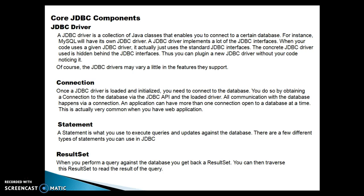The next component is the JDBC statement. A statement is used to execute queries and updates against the database. There are a few different types of statements you can use in JDBC — basically three types — which we will discuss in a future session. Regarding the result set: when you perform a query against the database you get back a result set. If you have a select query and execute it, the database returns a result set, and you can then traverse this result set to read the results of the query.